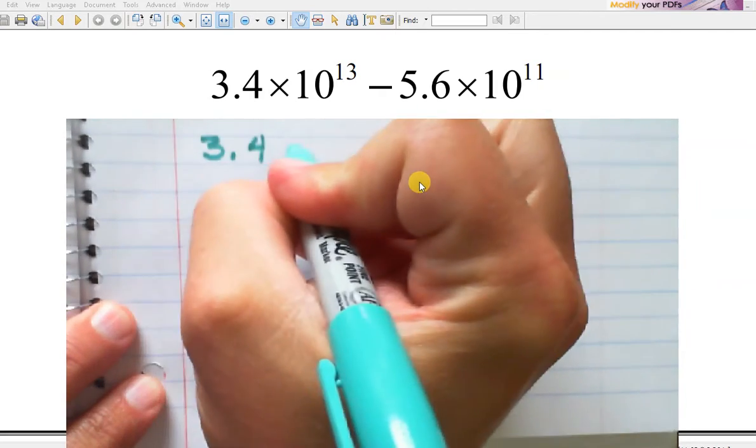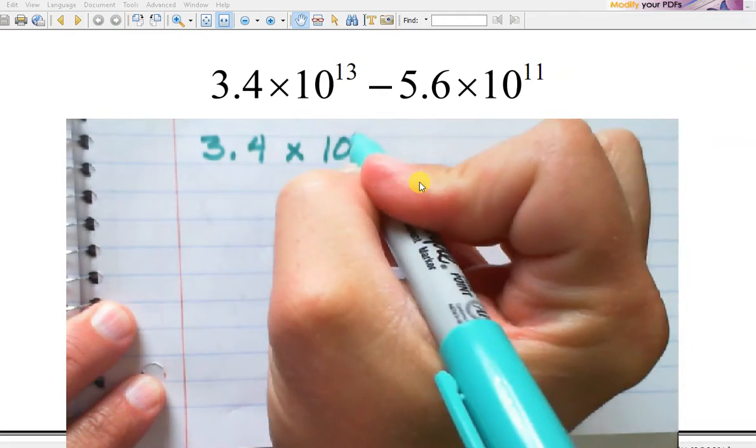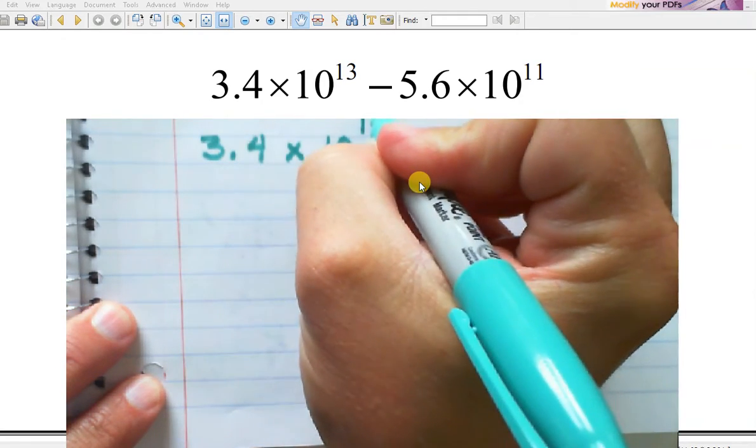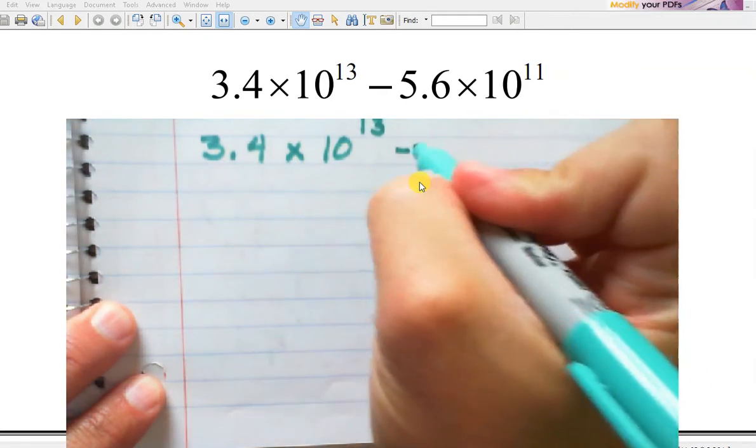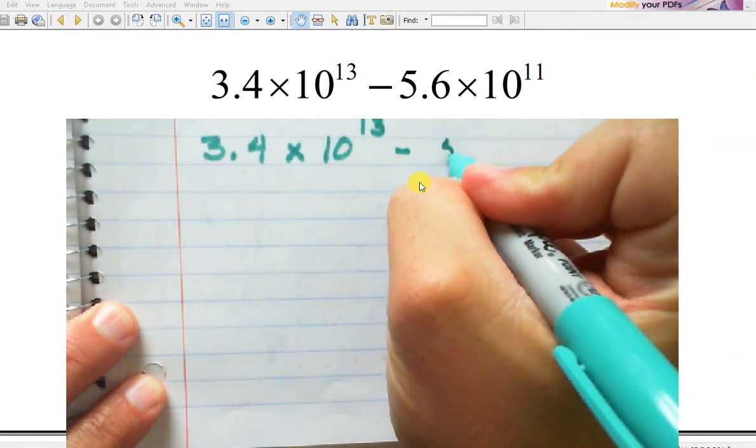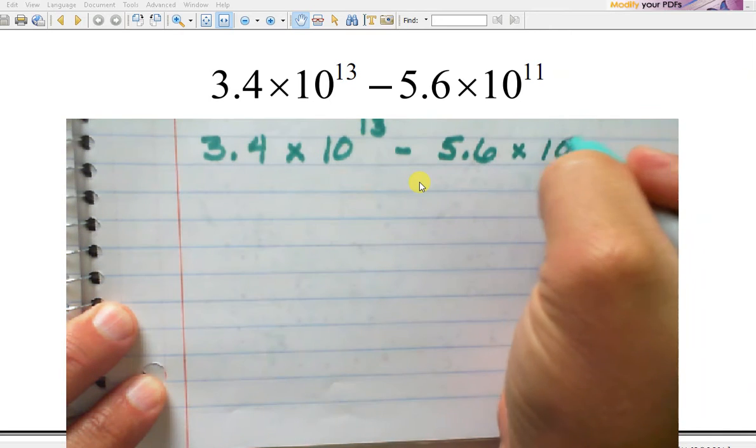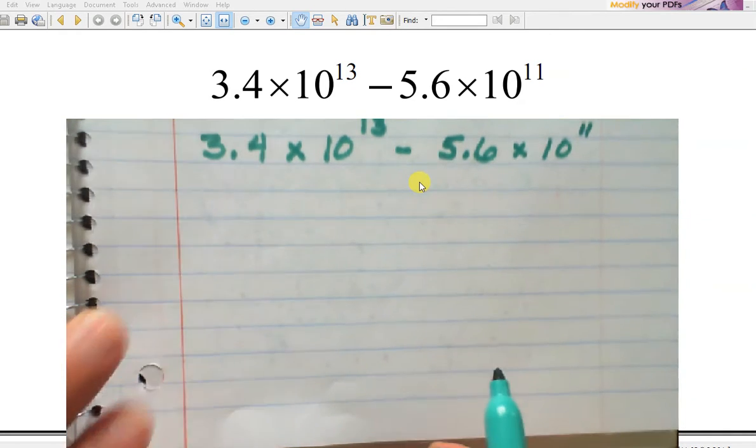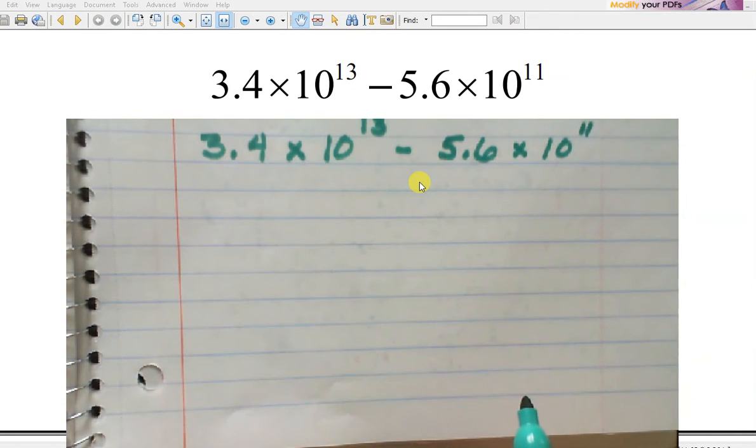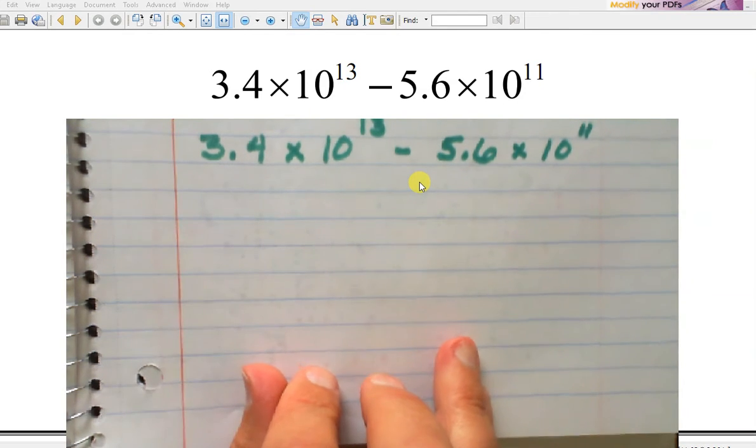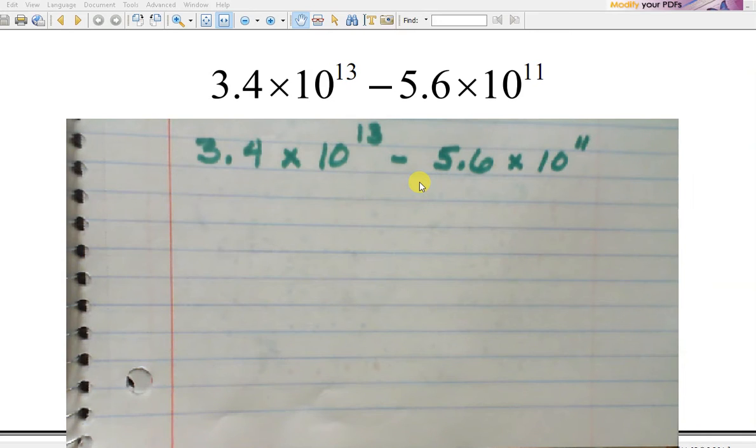3.4 times 10 to the 13th minus 5.6 times 10 to the 11th. And I am fine if you have a calculator that can do scientific notation and using that calculator, even on a test. If your calculator can do it, that's fantastic.